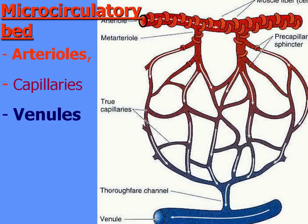The microcirculatory bed consists of microvessels with diameter less than 100 microns. Arterioles branch into blood capillaries and collect into venules. Arterioles stain red because they contain arterial blood enriched by oxygen.